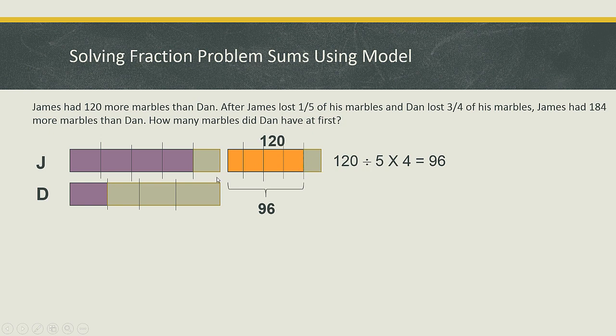Now this is the most crucial step. I want to find the common multiple between these five units and these four units. What is the common multiple between five and four? The answer is 20. The reason why I want to make it a common multiple is because I want to make these five units the same as these four units. I need to further break this up into their common multiple.